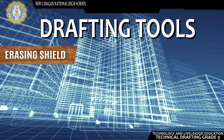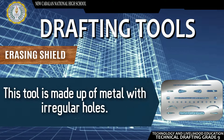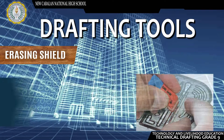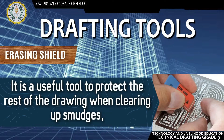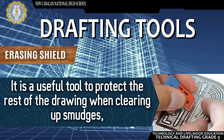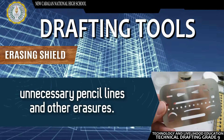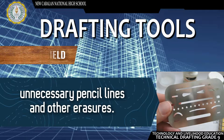Erasing Shield — This tool is made up of metal with irregular holes. It is a useful tool to protect the rest of the drawing when clearing up smudges, unnecessary pencil lines, and other erasures.